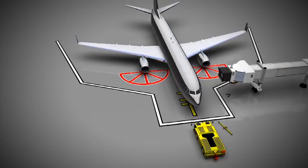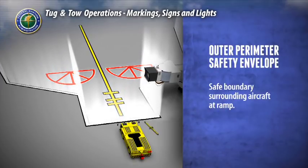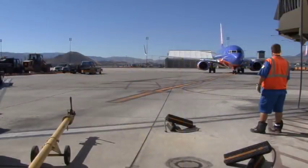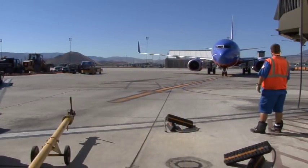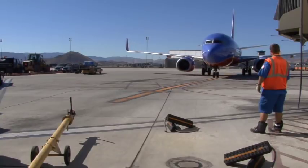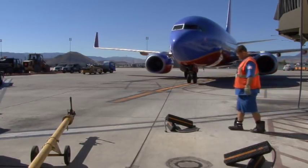The outer perimeter safety envelope represents the safe boundary surrounding an aircraft when it resides at the ramp. This marking is usually represented by a white line outlined in black, but sometimes it can be red with a yellow outline and may vary by airport. During any aircraft movement into or out of the ramp, all equipment — including tugs, tow bars, chocks, etc. — should be outside this area.